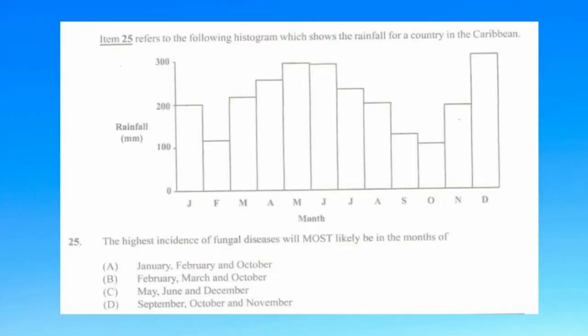Question number twenty-five refers to a histogram showing rainfall for a Caribbean country. The incidence of fungal diseases will most likely be in the months of a) January, February and October, b) February, March and October, c) May, June and December, d) September, October and November. The answer is c) May, June and December, as the incidence of fungal diseases increases when there is more rain.